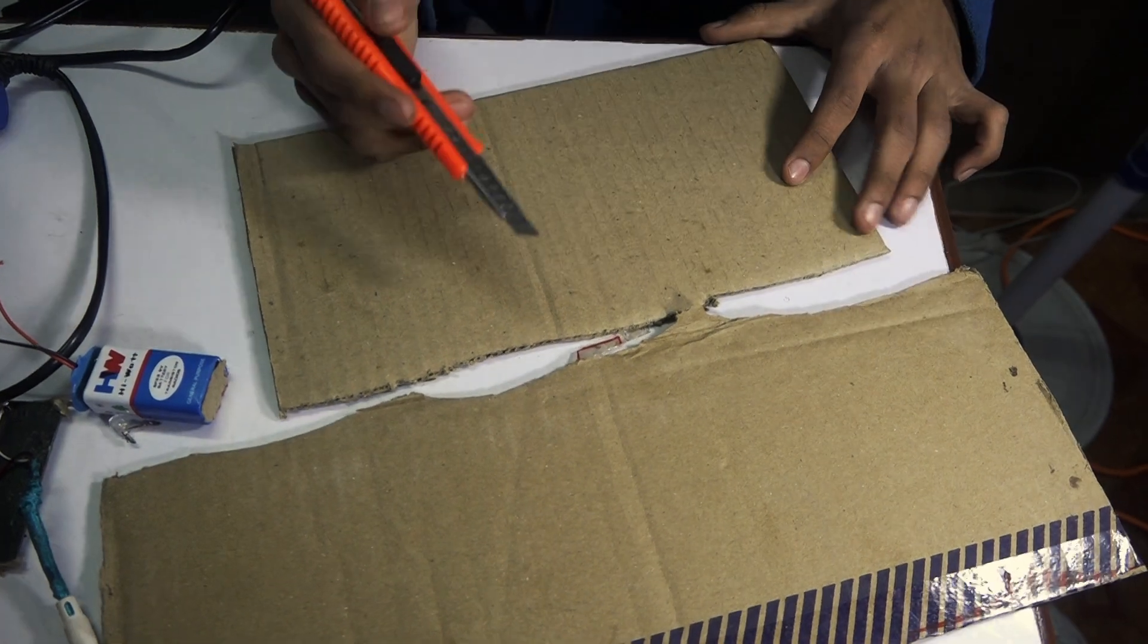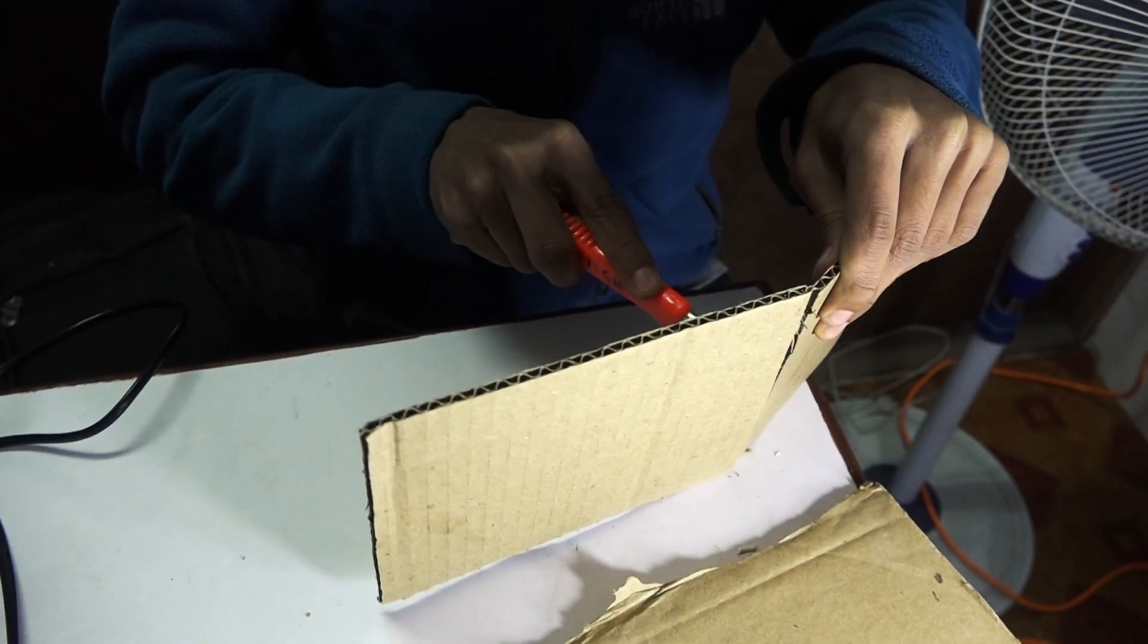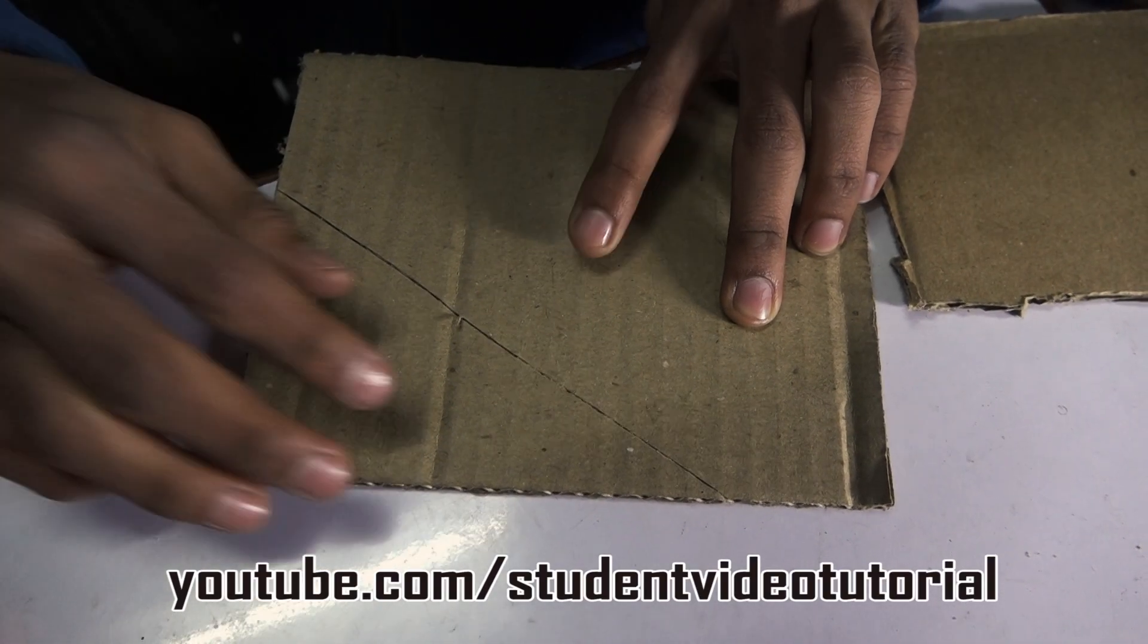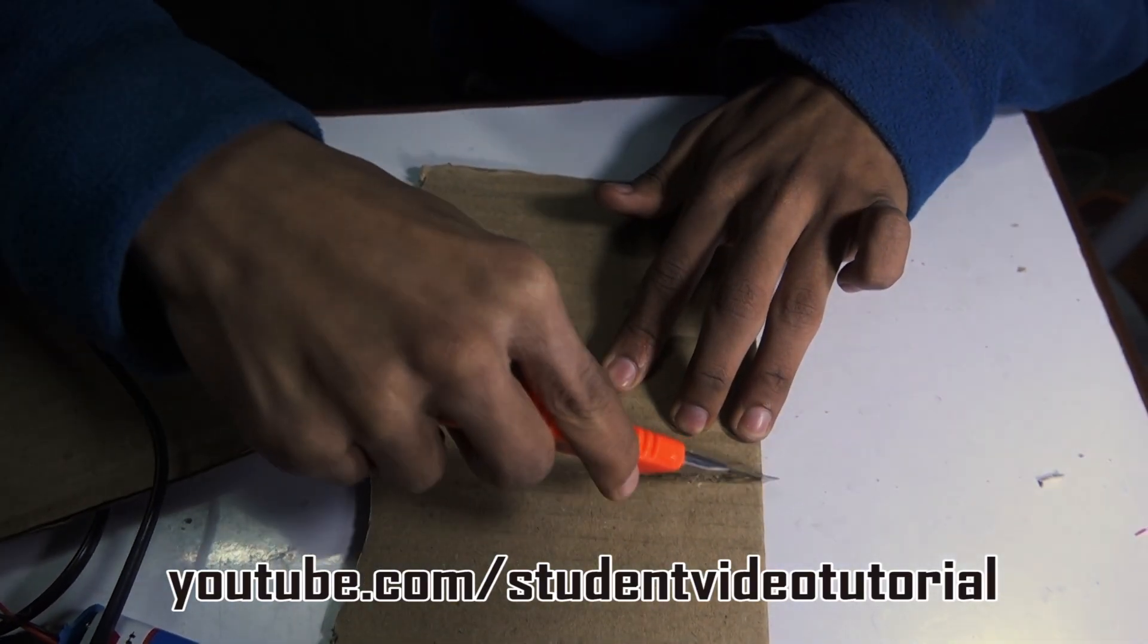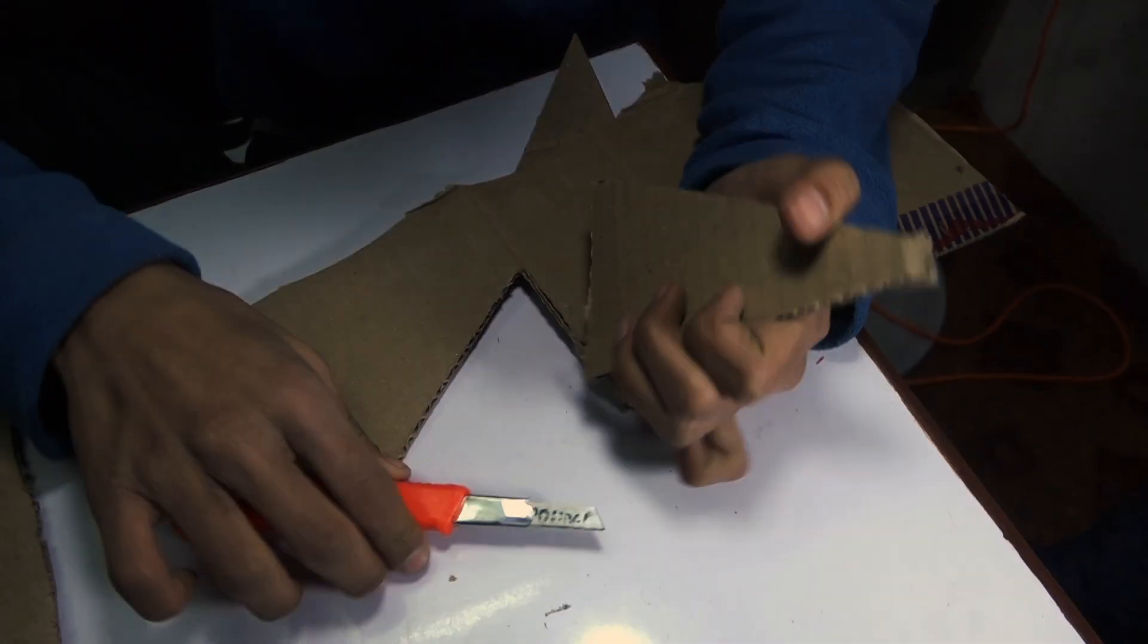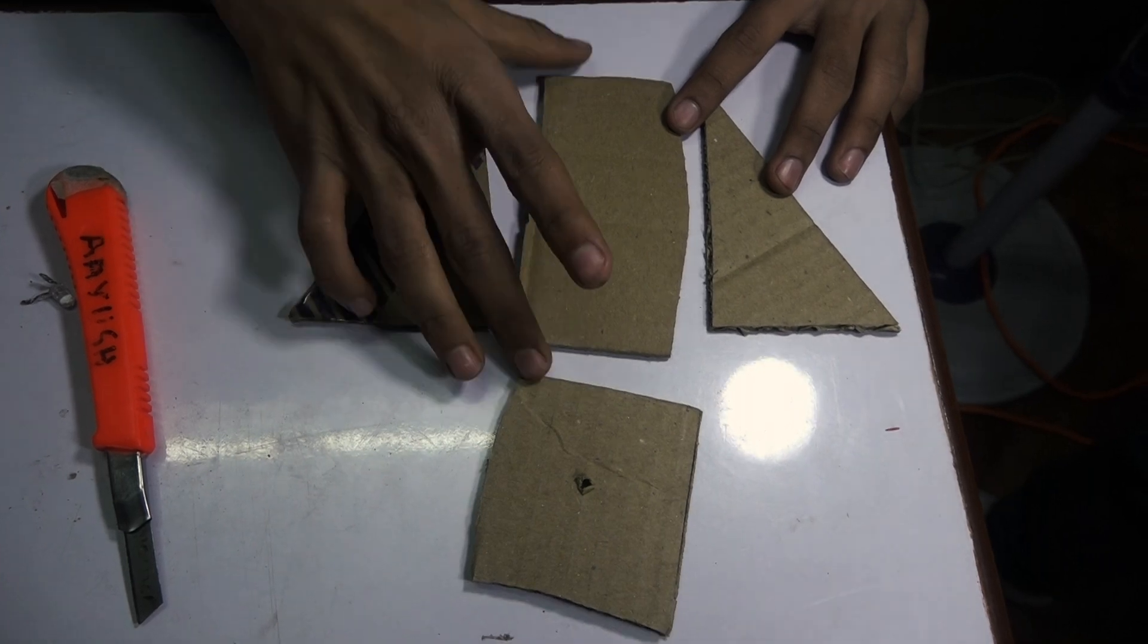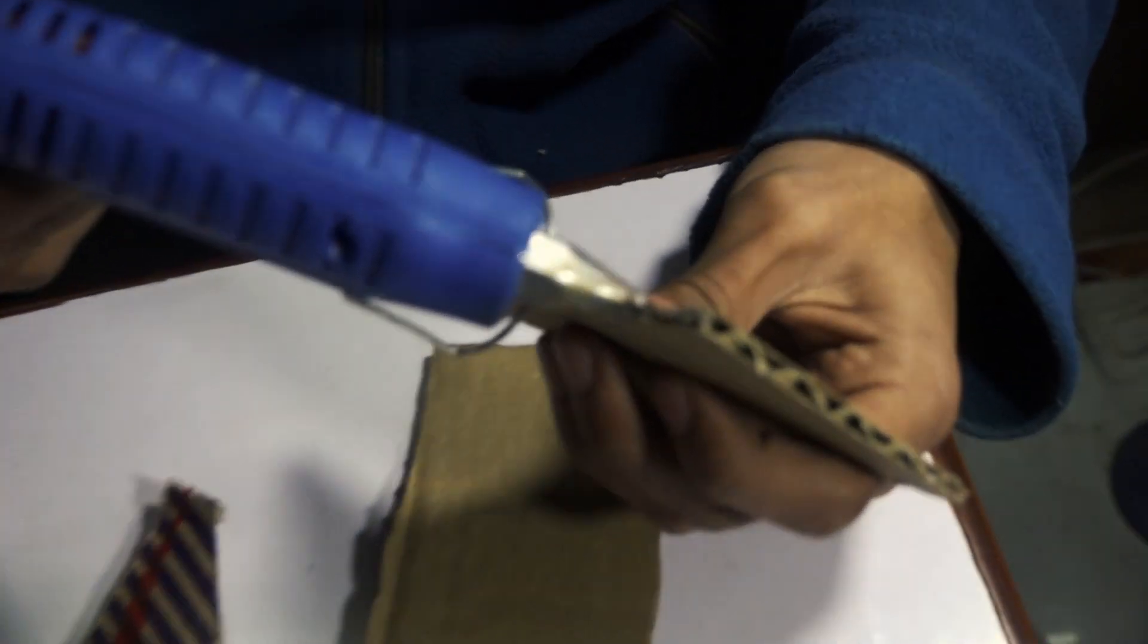So now let's cut this into pieces so that we can fix our components. So these are the cut pieces in which we will fix up our components. With the use of your hot glue gun, just join this in the cardboard here.